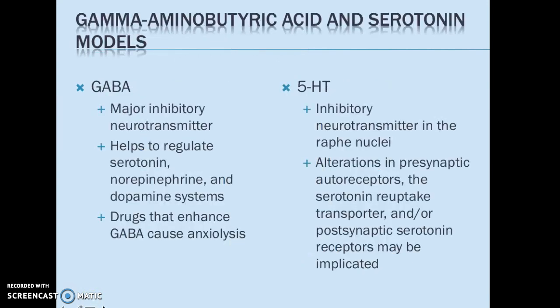Looking at GABA and serotonin on their own — GABA, our major inhibitory neurotransmitter, helps regulate serotonin, norepinephrine, and dopamine systems together. When we enhance GABA or increase its utilization within the brain, that causes what we call anxiolysis, which is the relief of anxiety. Serotonin in this context is an inhibitory neurotransmitter found in the raphe nuclei. Alterations in serotonin here will affect the serotonin reuptake transporter and postsynaptic receptors, so when those receptors are altered, 5-HT will not work as well and can cause more sensitivity to anxiety.